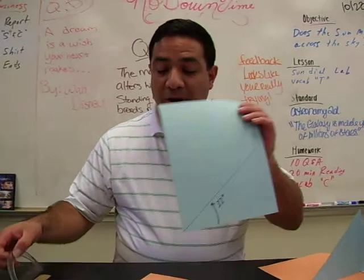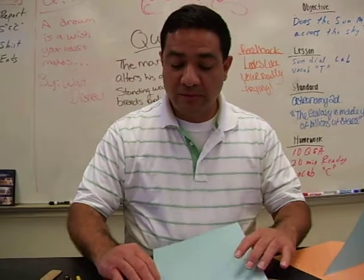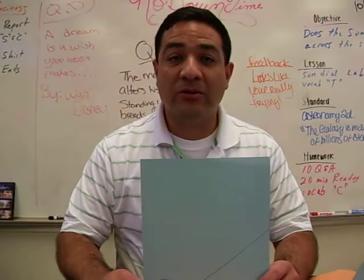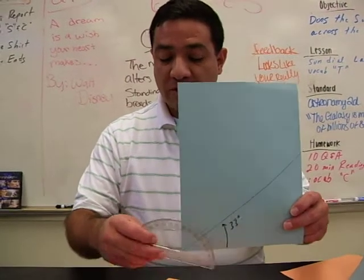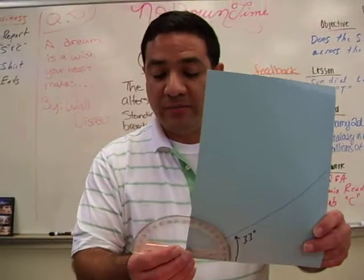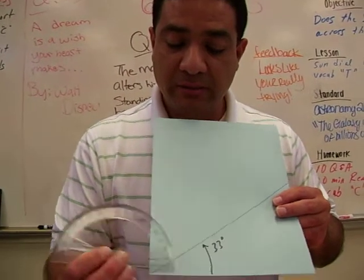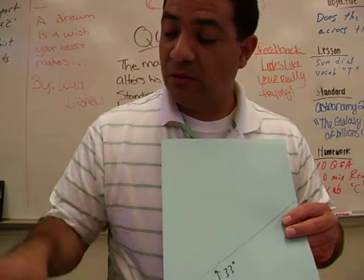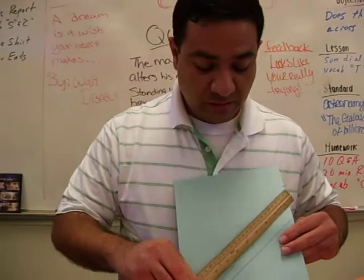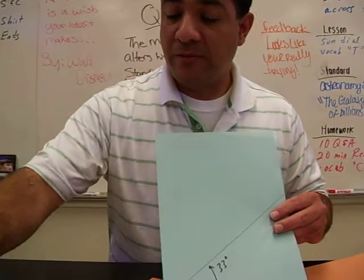The first thing you want to do is figure out what latitude you are relative to the equator. Here in Winter Haven, California, we're at 33 degrees above the equator, so we use the protractor and calculate where the 33 degrees are. Then we draw a dot, use the ruler to do a straight line because we want this right triangle.